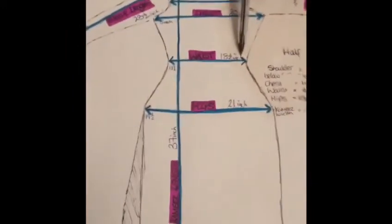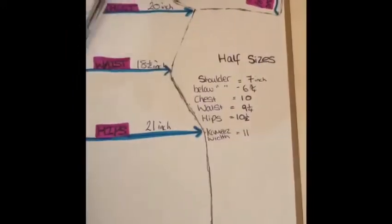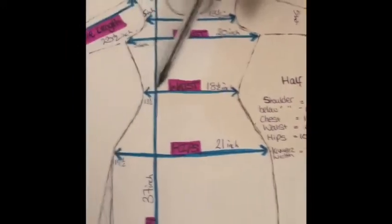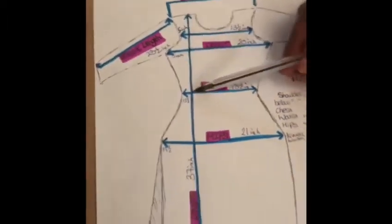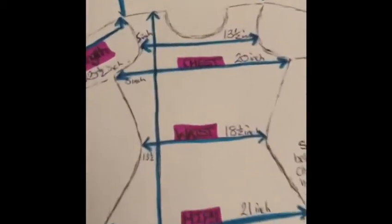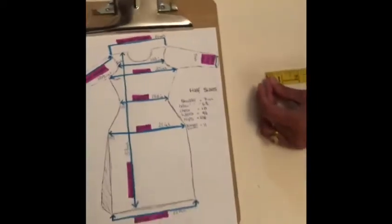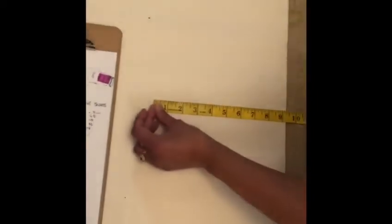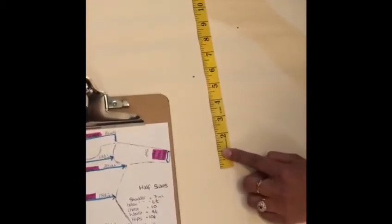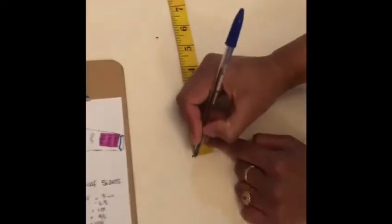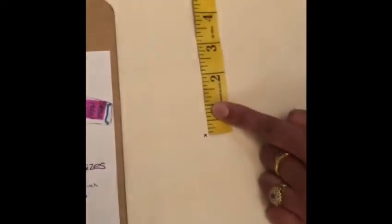Next one is the waist, which is 9 and a quarter inches because we've halved that again. From the shoulder down is 13 and a half. So let's go 9 and a quarter inches this way, and from the top down it's 13 and a half inches. Mark it down.